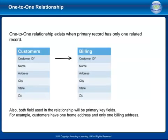A one-to-one relationship exists when a primary record has only one related record. Both fields used in the relationship will be primary key fields. For example, a customer having one home address and only one billing address represents a one-to-one relationship.